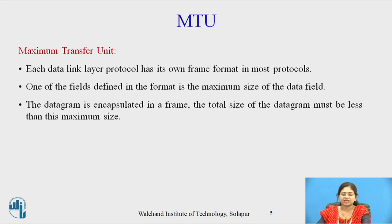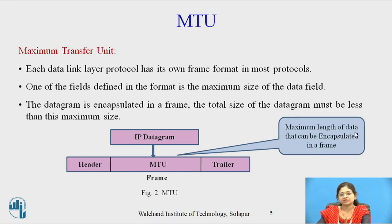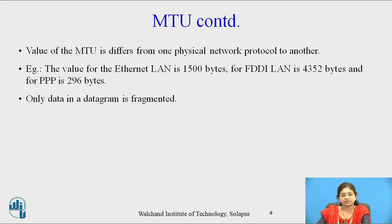Now let's see MTU, which occurs in a frame. MTU is Maximum Transfer Unit. Each data link layer protocol has its own frame format; one of the fields defined in the format is the maximum size of the data field. The datagram is encapsulated in a frame, and the total size of the data must be less than this maximum size. The maximum length of data that can be encapsulated in a frame is known as MTU. The value of MTU differs from one physical network protocol to another. For example, Ethernet LAN is 1500 bytes, FDDI LAN is 4352 bytes, and Point-to-Point Protocol is 296 bytes.